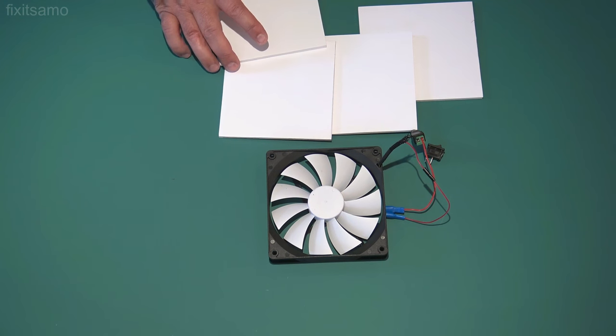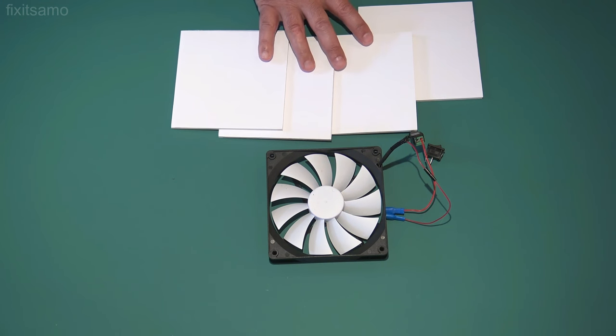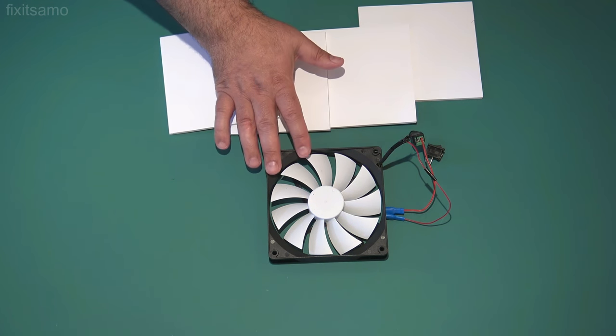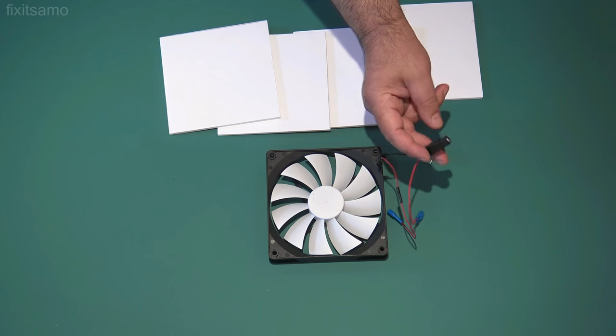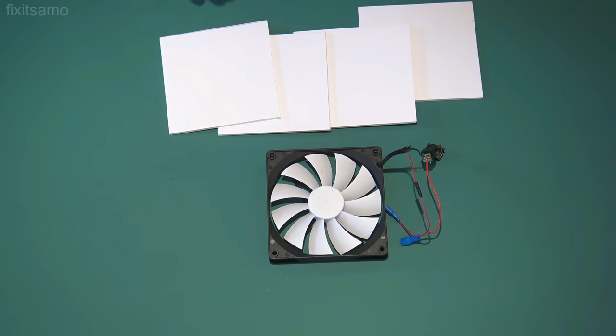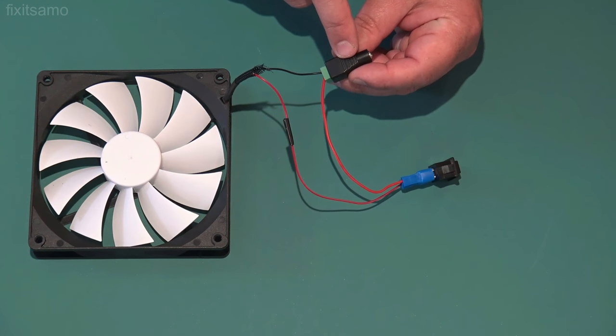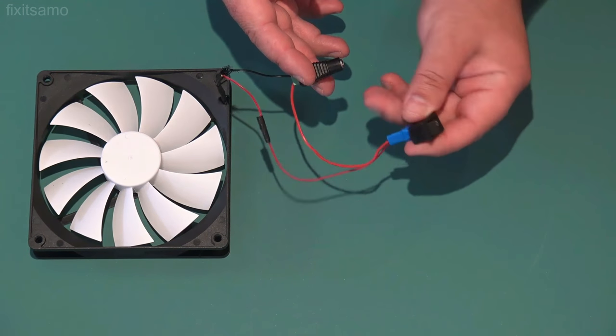All right so as you see I've got my four squares that's going to be the box for my fan, but before we do the box we have to make sure our wiring is working. It's very simple and basic. We have the adapter plug and the on off switch.